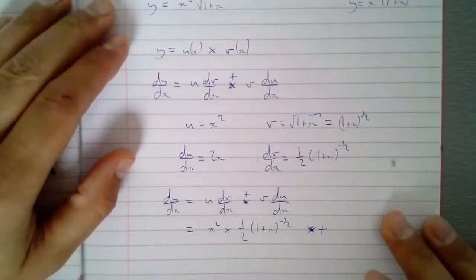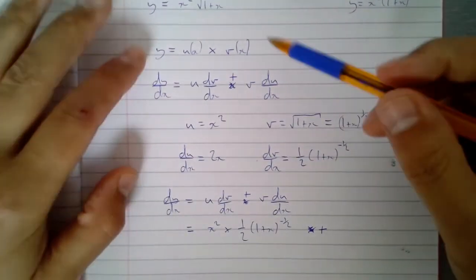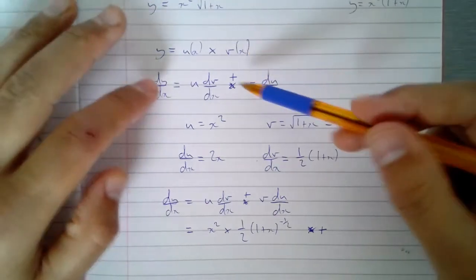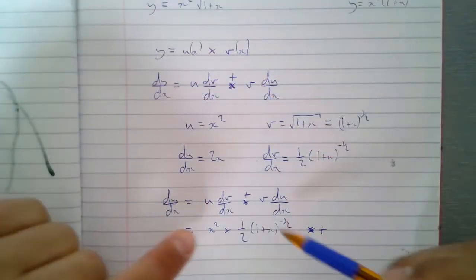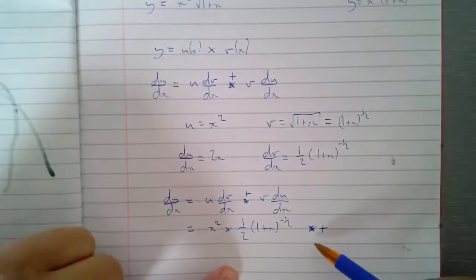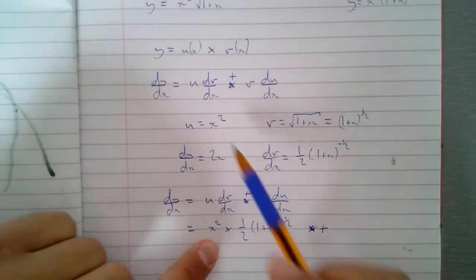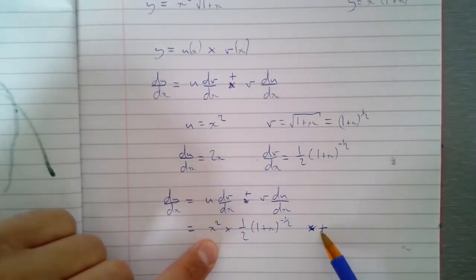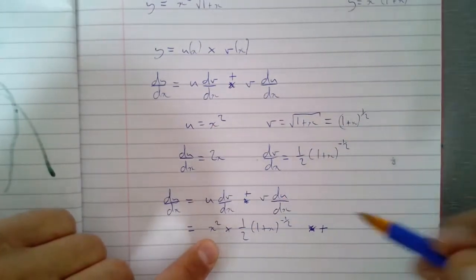That should be a plus and that should be a plus. That's better. So just make sure we go through and change it. Yes, it's a product of functions but you add these two things together. So I've got x squared times this one plus this times that one.